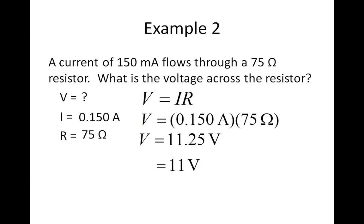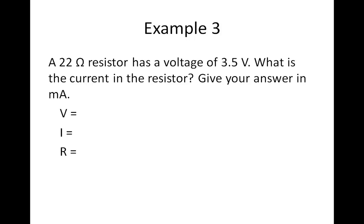Finally, let's solve a problem where we have to find the current. In example three, a 22 ohm resistor has a voltage of 3.5 volts. What is the current in the resistor? Give your answer in milliamps. Step one: write the data list. V equals 3.5 volts, I is what we're asked to find, and R is 22 ohms.